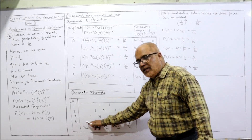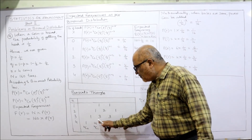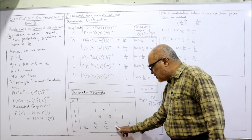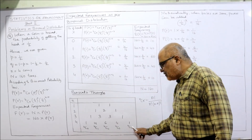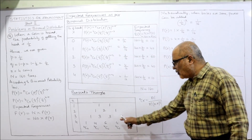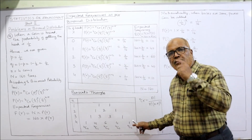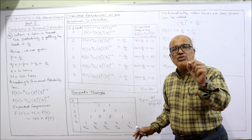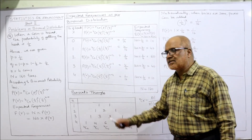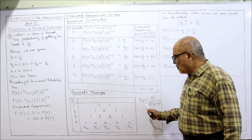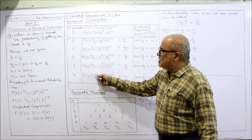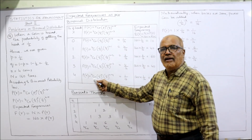From the Pascal's triangle row for n=4, we read: 4C0 = 1, 4C1 = 4, 4C2 = 6, 4C3 = 4, 4C4 = 1. Even if you calculate using the formula, you get the same values. The advantage is that in one stroke we can get all NCR values using Pascal's triangle.